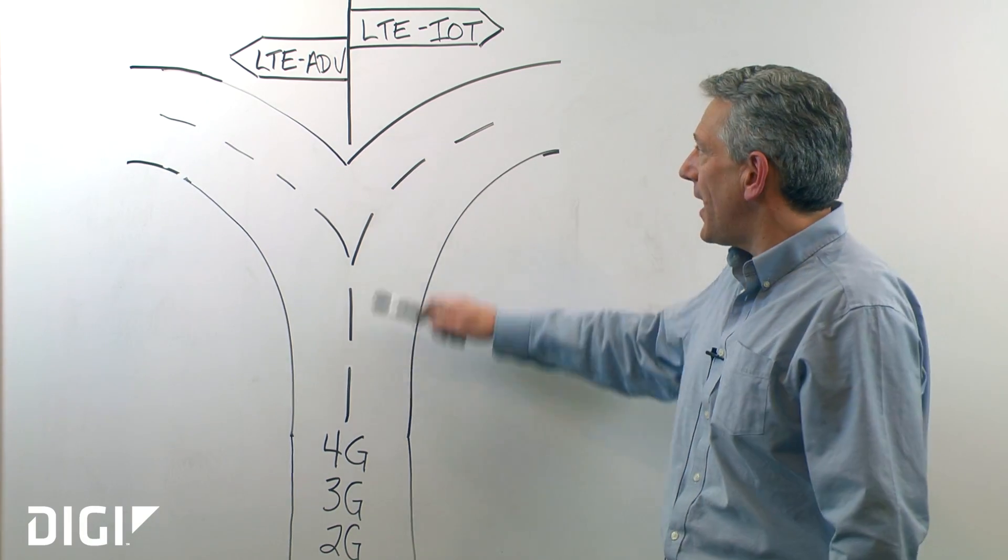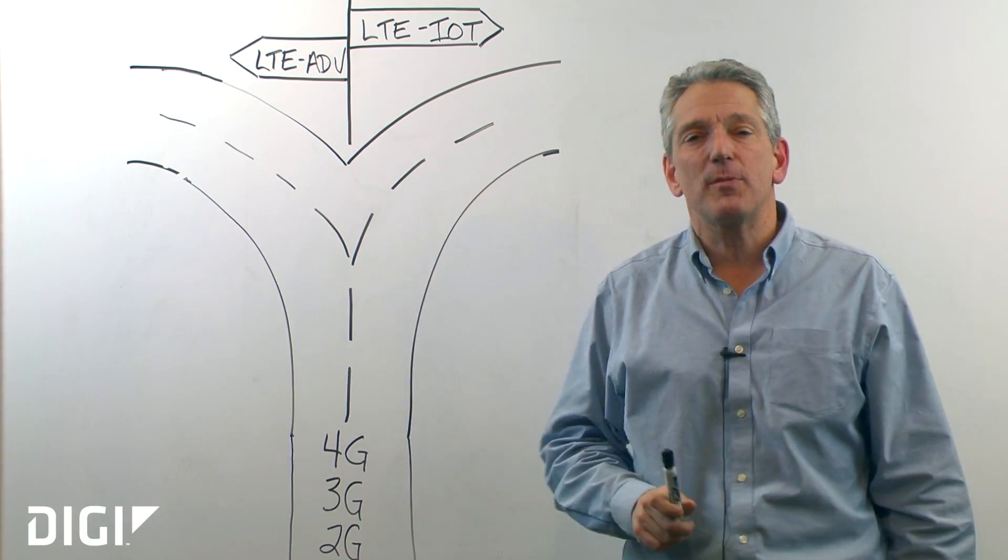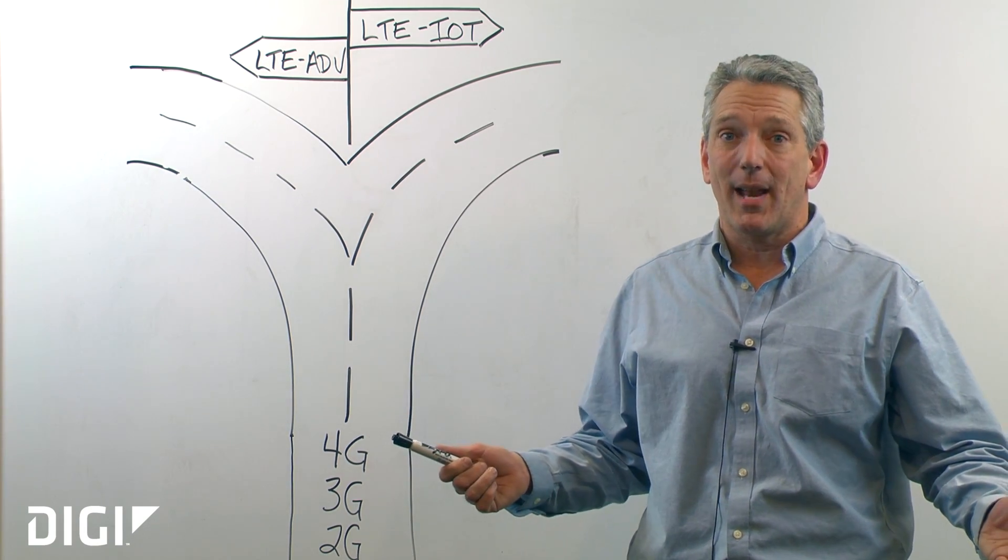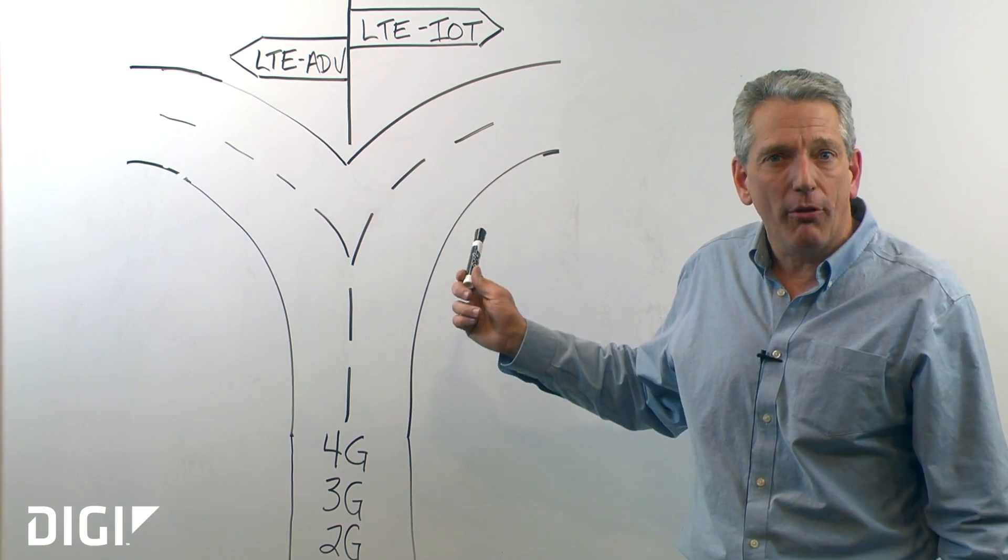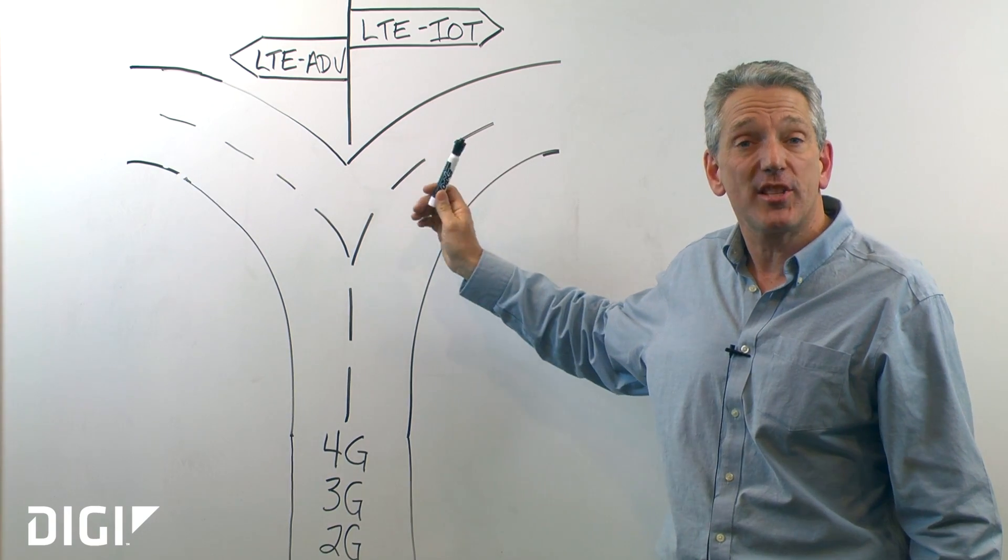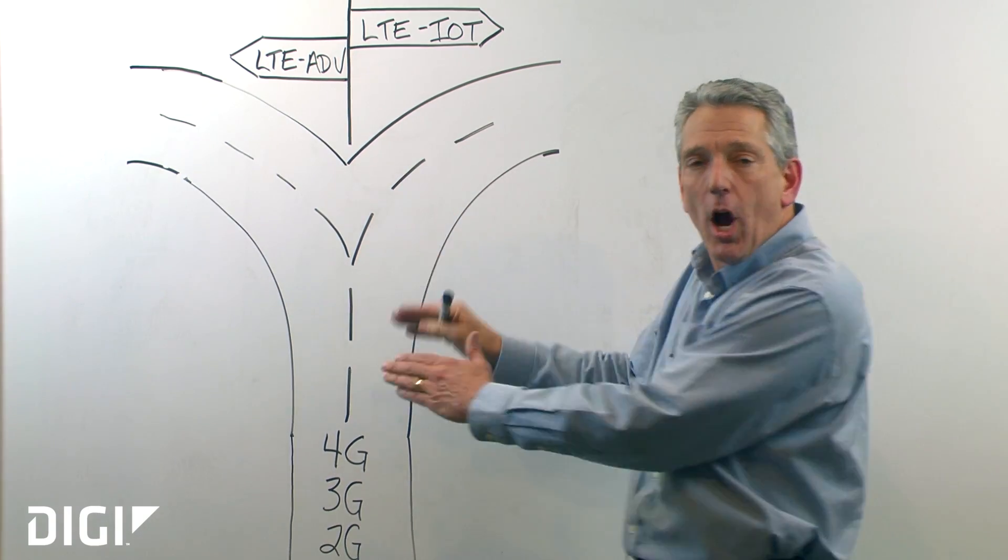But, on the other side, we have the world of the smaller Internet of Things. Sensors. Sensors don't care about a lot of bandwidth. And sensors like to control things. So, what happens? That means we have a fork in the road and our standards and cellular technology are splitting.